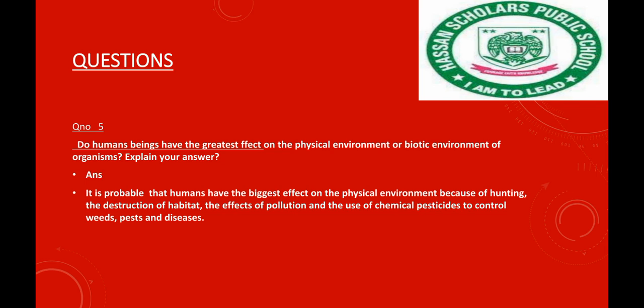These are different ways that we have to control in the world. For example, we are using hunting for animals, the destruction of habitat, and the effect of pollution.